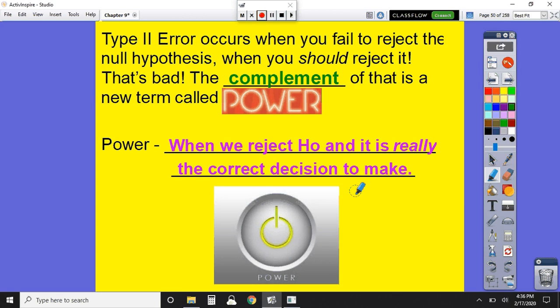Now our type 2 error occurs when you fail to reject the null, but we really should have rejected it. And that's a bad thing. Remember in our court case that we talked about in video 3, that's when we found a guilty person not guilty. And that's bad for everybody. So the complement of a type 2 error is called power. And power is when we do what we want to do, when we reject the null hypothesis, and it really was the right decision to make. So we have type 1 error and type 2 errors, and then the complement of a type 2 error is called power.